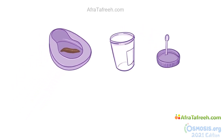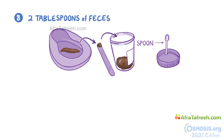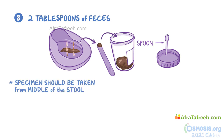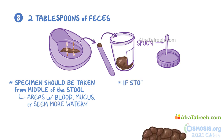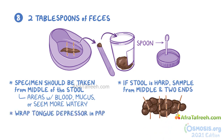To collect the stool specimen, you can use the spoon attached to the lid of the specimen container or a tongue depressor. Take two tablespoons of feces and place them into the specimen container. If the stool is formed, the specimen should be taken from the middle of the stool. Also make sure to take a sample from areas with blood, mucus, or any areas that seem more watery. If the stool is hard, take a sample from the middle and the two ends of the stool. If you use a tongue depressor, wrap it in paper towels or toilet tissue and dispose of it safely.